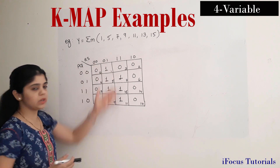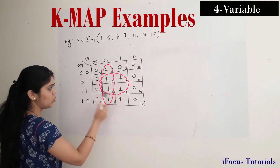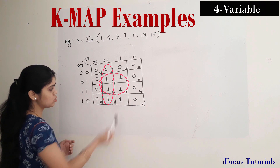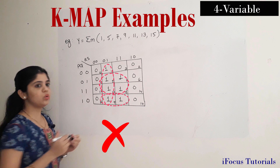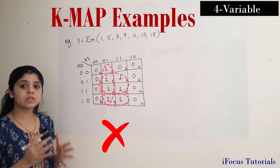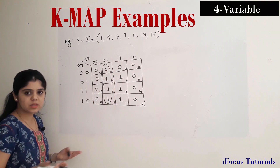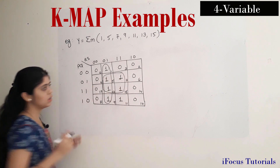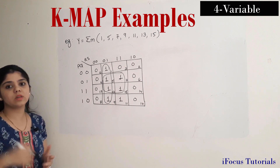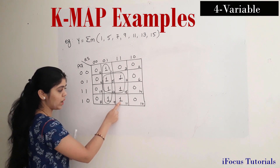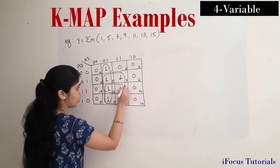Now we have to form groups. Consider this entire quad and this another quad — but we have to form groups according to priority: 8, 4, 2, and then 1. Making a pair for the remaining 1 is not wrong, but it will not give a simplified expression. So I have to group that remaining 1 with the highest priority. This 1 can be part of an entire quad, so I am going to make a quad here, not a pair.